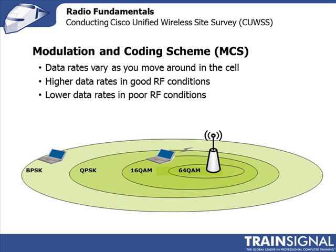If users want the highest data rates everywhere, that means you'd have to deploy a lot more access points, because you'd actually have to deploy them supporting 16-QAM and 64-QAM. What a customer really wants is a combination of good throughput and higher data rates combined with coverage, because if you deploy a cell that only supports higher data rates, your coverage is going to be a lot less and you'll have to deploy a lot more access points, making the deployment much more expensive. Finding the right balance between throughput and coverage is an important consideration when you start doing your site survey.